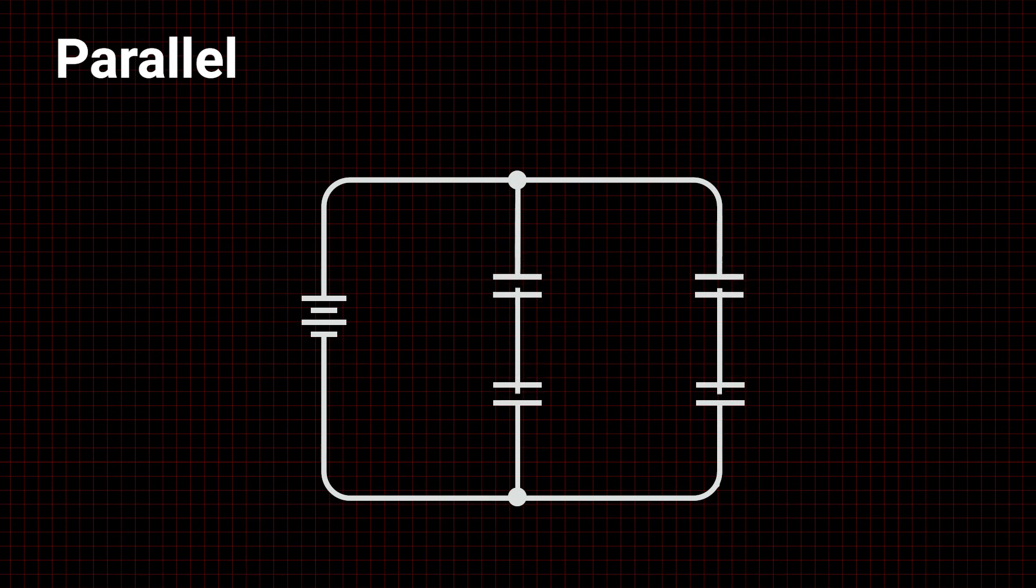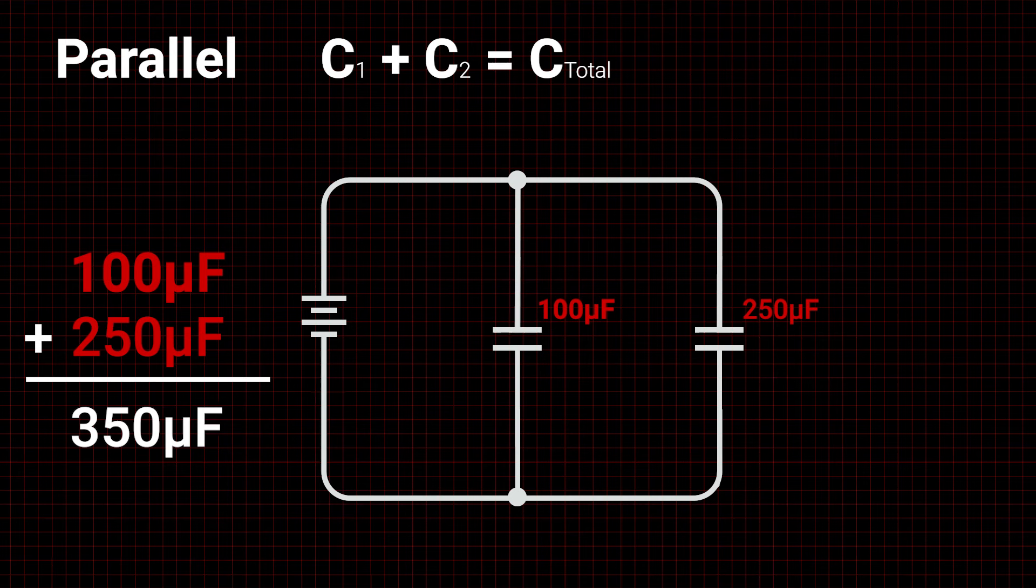In a parallel configuration, each capacitor is connected to the source and will charge fully. Therefore, total capacitance is the sum of the individual capacitor values.